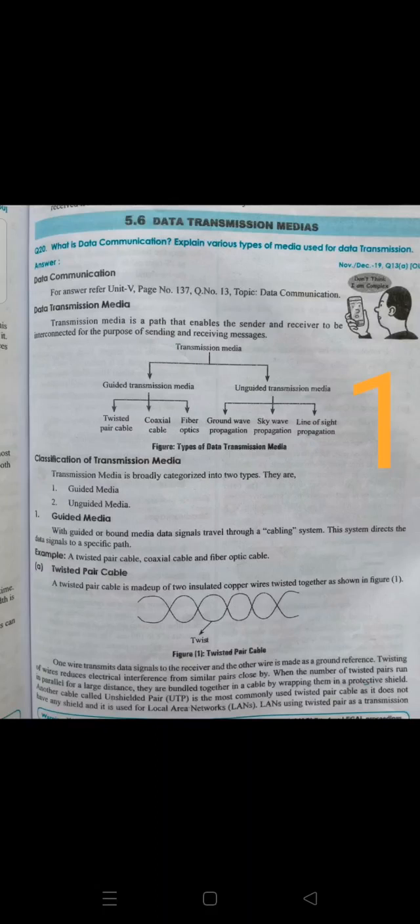Baseband coaxial cable uses its entire bandwidth to transmit a single stream of data and is commonly used in local area networks. A disadvantage of baseband coaxial cable is that it needs repeaters. A repeater is a device which amplifies signals, and repeaters are needed approximately every kilometer to strengthen the data signal.